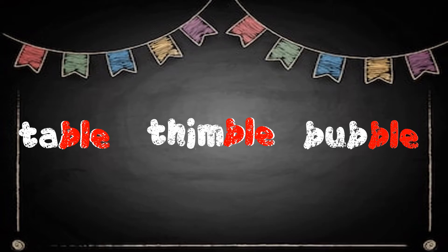B, L, E is something new that we call a final stable syllable. We call it 'final' because it's in the final position. We call it 'stable' because it does not change. When we say something is stable, it never changes. We can count on it always having the 'bull' sound in the final position.